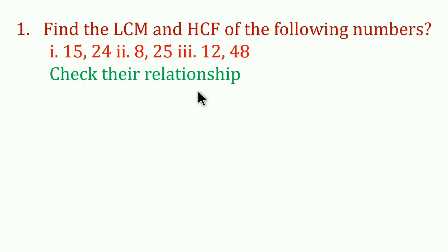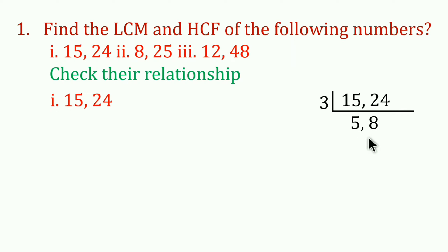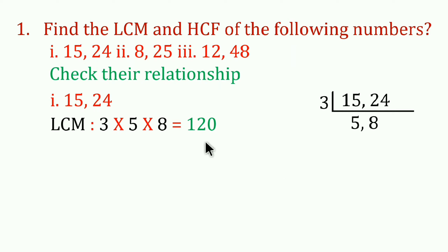Let's check their relationship. Here we are going to find the LCM and HCF. For the first problem, 15 and 24, we divide by 3 to get 5 and 8. Since 5 and 8 are not divisible further by a common factor, the LCM is 3 × 3 × 5 × 8, which equals 120.